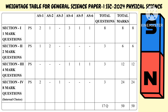Weightage table for General Science Paper 1, SSC 2024 Physical Science. In Section 1 there are eight questions — answer all the questions and each question carries one mark. There are two questions from AS1, one from AS2, three from AS4, one from AS5, and one from AS6 — together eight questions, eight marks. In Section 2 there are three questions, each carrying two marks — answer all the questions: one from AS1, two from AS2 — together six marks.